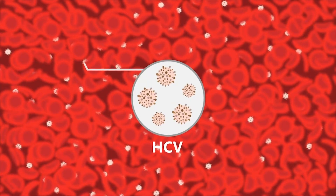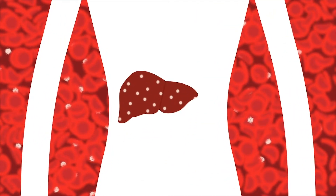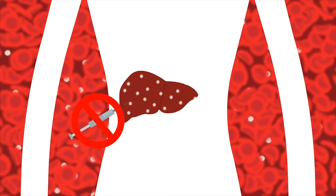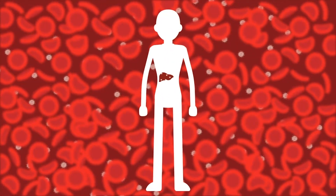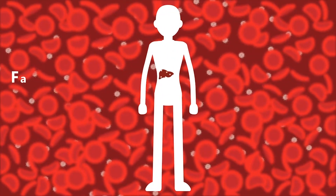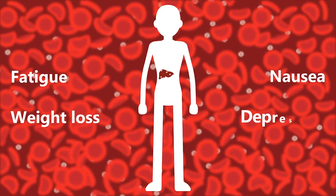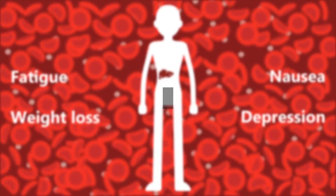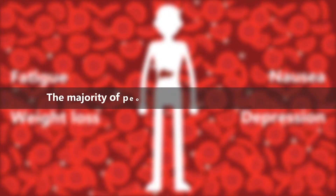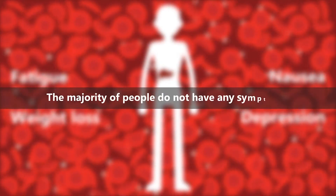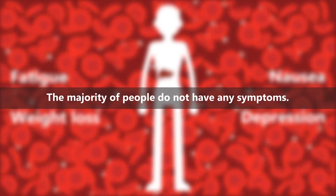Hepatitis C is also a disease that attacks the liver. However, the disease cannot be prevented by vaccine. Signs and symptoms of the disease include fatigue, weight loss, nausea, and depression. The majority of people do not have any symptoms.